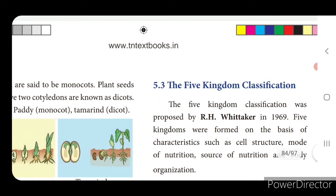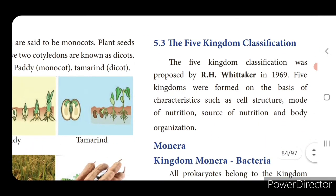The next topic is the five kingdom classification. The five kingdom classification was first proposed by R. H. Whittaker in 1969. Five kingdoms were formed on the basis of characteristics such as cell structure, mode of nutrition - whether it is autotrophic or heterotrophic. Autotrophic means which can produce food for themselves; heterotrophic means which cannot produce food and will depend on other organisms for getting food.